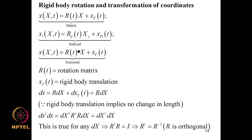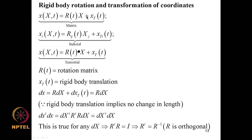Rotations play a crucial role in analysis of nonlinear systems. Consider the displacement field with rigid body translation and rotation: x = RX + xT, where R is a rotation matrix and xT is a rigid body translation. This is expressed in matrix, indicial, and tensorial forms. From this equation, dx = R dX since DxT = 0 for rigid body translation, implying no change in length.